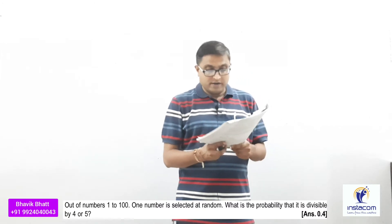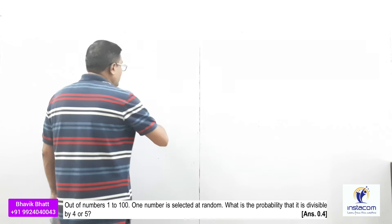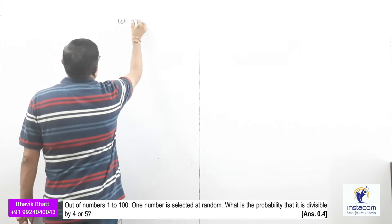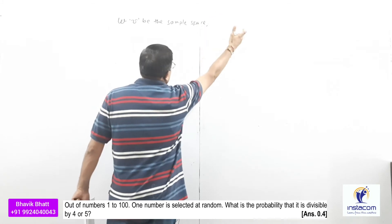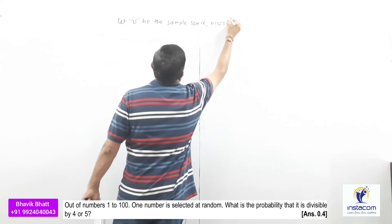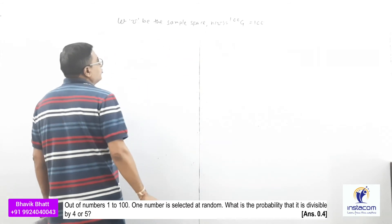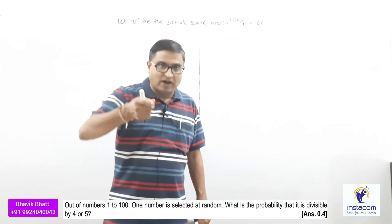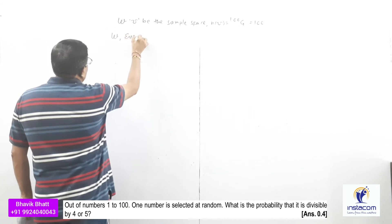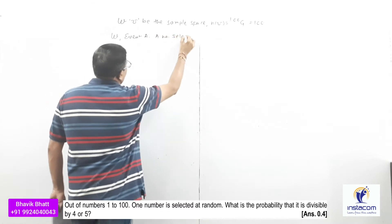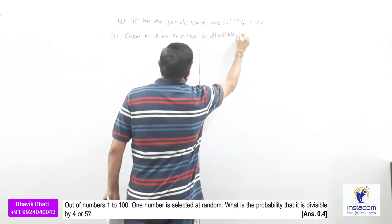Out of numbers 1 to 100, one number is selected at random. What is the probability that it is divisible by 4 or 5? Let U be the sample space, so N(U) = 100. Let event A be that a number selected is divisible by 4.